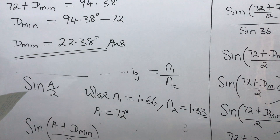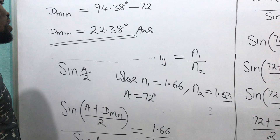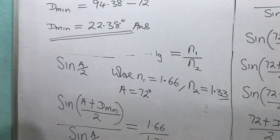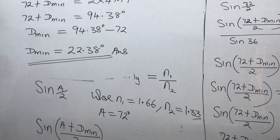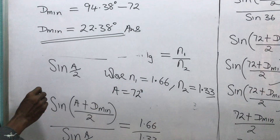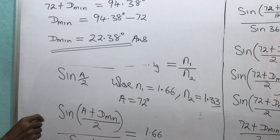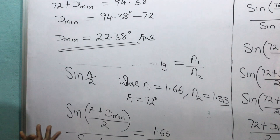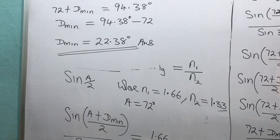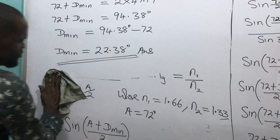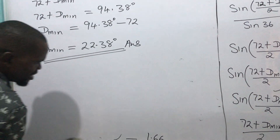This is a WAEC question — part B of a WAEC question. So the answer to this particular question is the minimum deviation of 22.38 degrees. Now, some of you may be confused about how we get this formula. Let's see how the formula comes about — briefly, in this video.